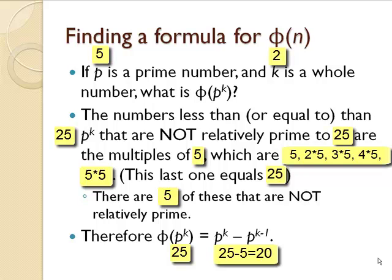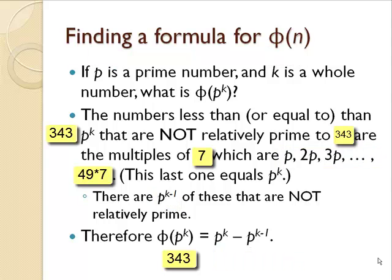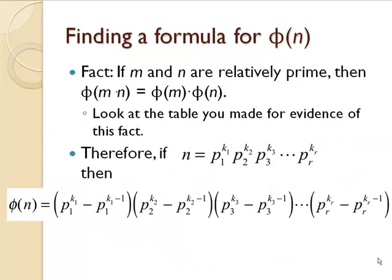This holds true when p is 5 and k is 2, so that it holds for 25. And if p is 7 and k is 3, we get phi of 343 is 294.